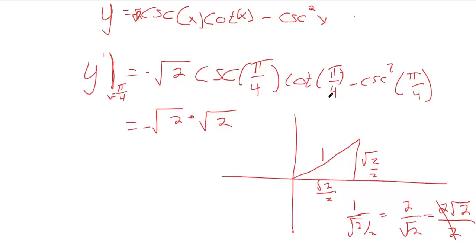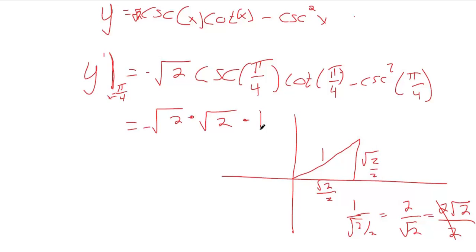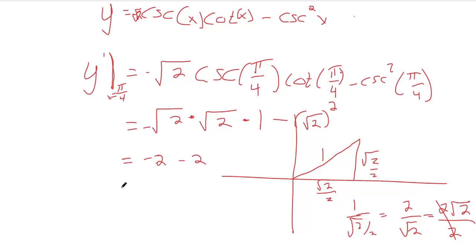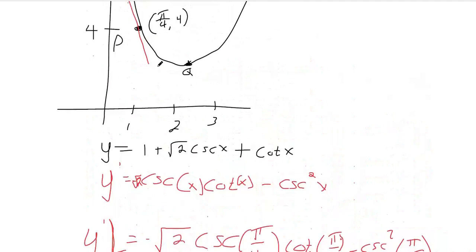Cotangent pi over four: cotangent is the reciprocal of tangent. Tangent is opposite divided by adjacent, so cotangent is adjacent divided by opposite — either way it's one. So cotangent pi over four equals one. Then cosecant squared: cosecant pi over four is square root of two, but we square that result, giving two. So this becomes negative square root of two times square root of two, which is negative two, minus two equals negative four. The derivative when x equals pi over four is negative four.